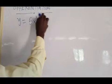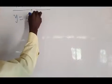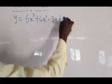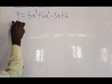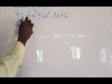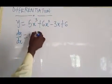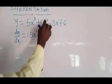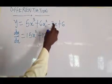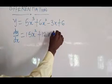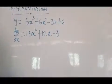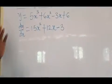Let's say we have y = 5x³ + 6x² - 3x + 6. How do you solve this kind of question? Your dy/dx will now be: 3 times 5 gives 15x², plus 2 times 6 gives 12x¹. If you differentiate a constant times x it gives the constant, and if you differentiate just a constant it gives 0, so you don't need to write it.